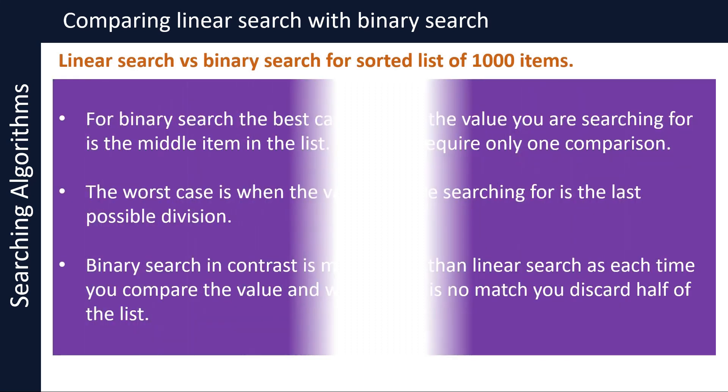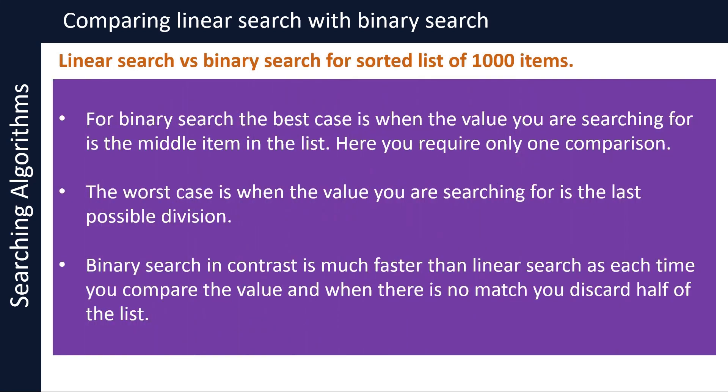Binary search in contrast is much faster than linear search, as each time you compare the value and when there is no match, you discard half the list. For binary search, the best case would be for the value you are searching for to be the middle item in the list — here you require only one comparison. The worst case scenario is when the value you are searching for is at the last possible division.